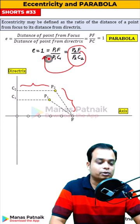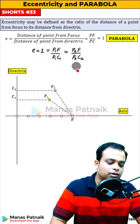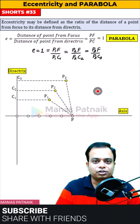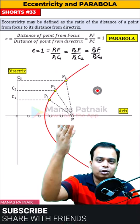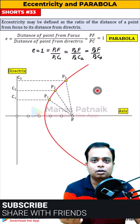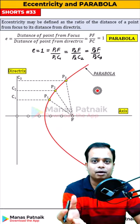Similarly, you can get a third point. When you've got sufficient points and pass a curve through them, what you have is a beautiful curve called a parabola.